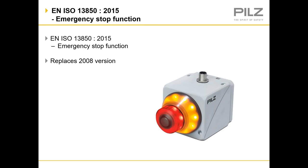On to EN ISO 13850 for emergency stop functions. This standard was revised in 2015 and has replaced the previous 2008 version, so it's key to mention that if you follow or reference the 2008 version then you can no longer claim presumption of conformity to the machinery directive or the supply of machine safety regulations. You must use and reference the 2015 version.